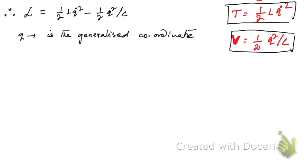From Euler-Lagrange equation, we get: d/dt(∂L/∂Q̇) - ∂L/∂Q = 0. This is the Lagrangian equation of motion.